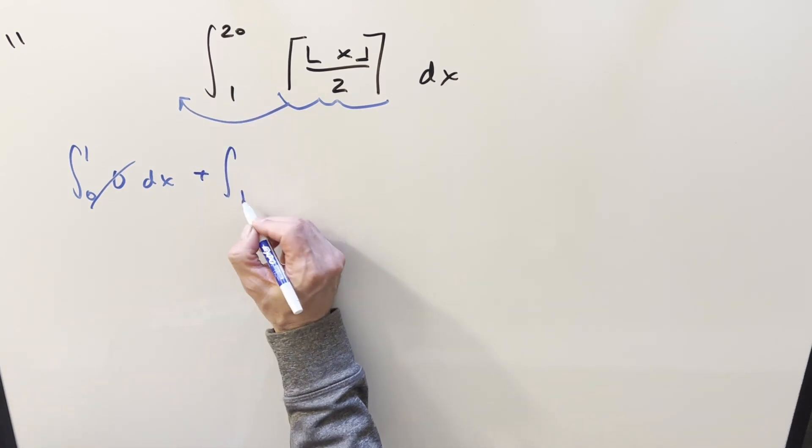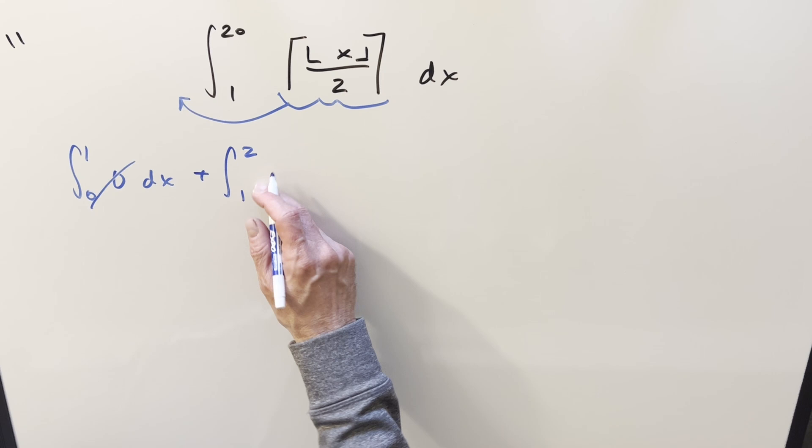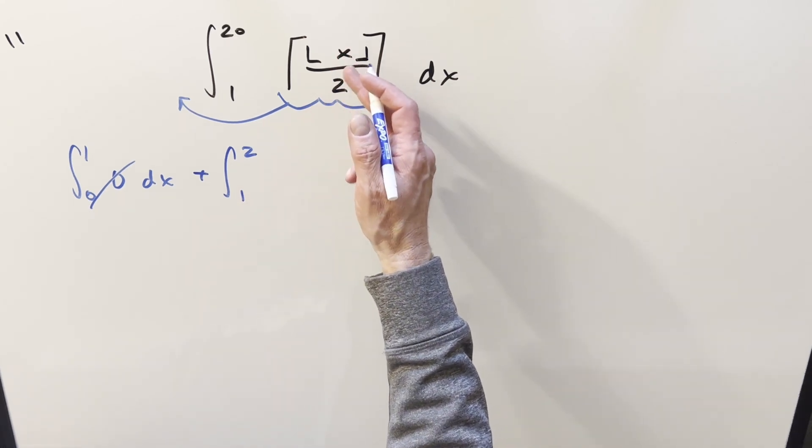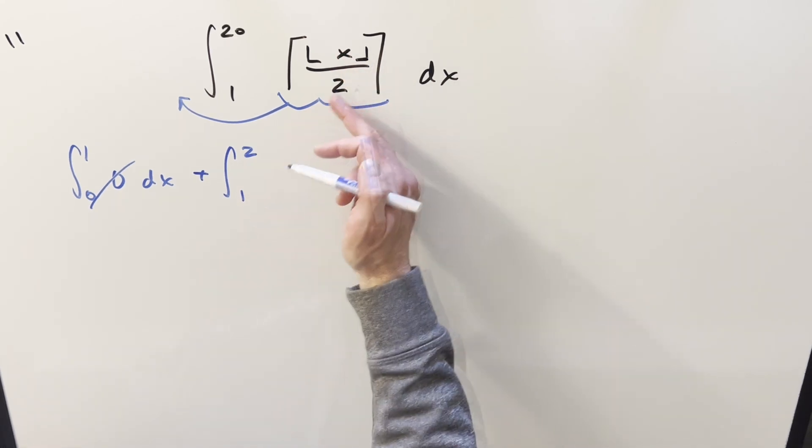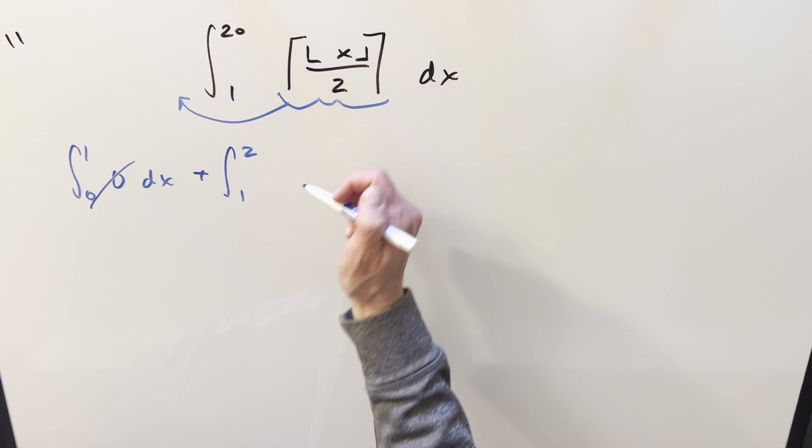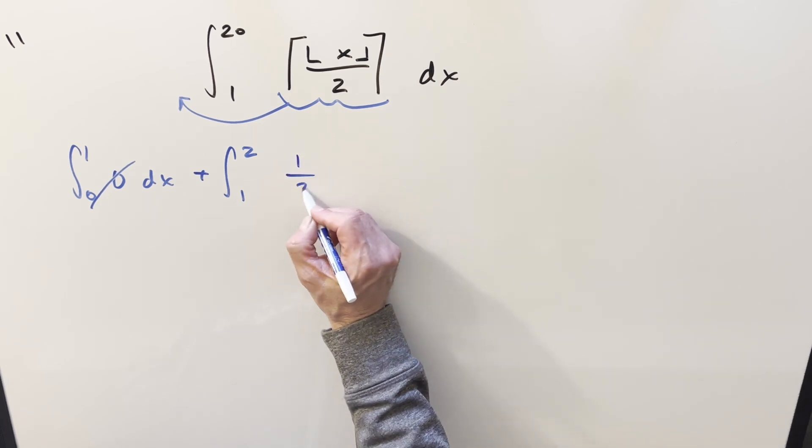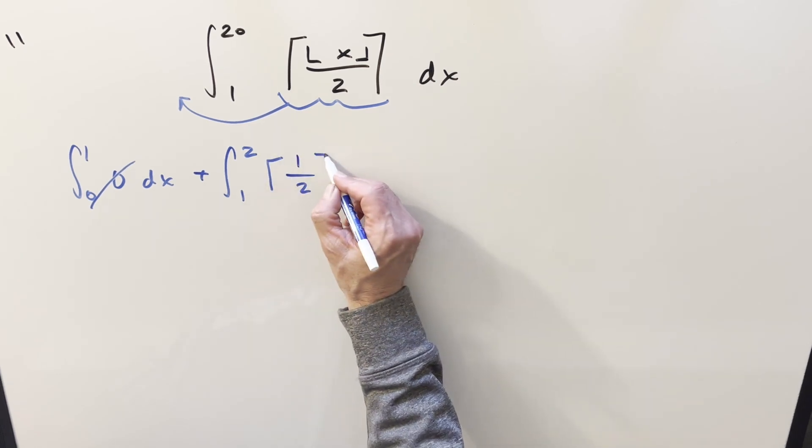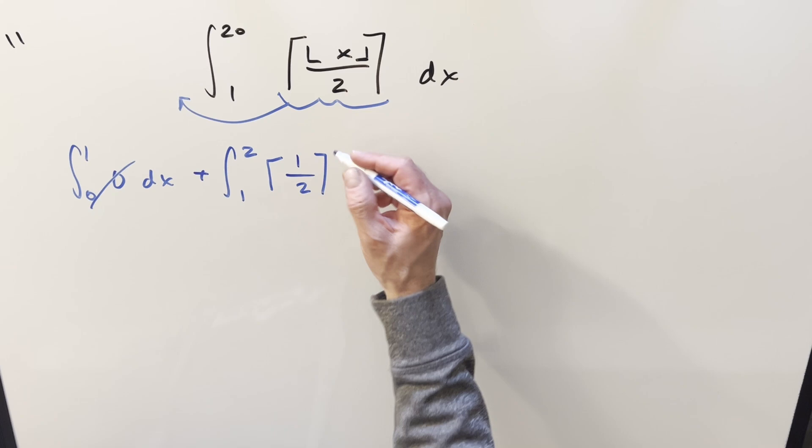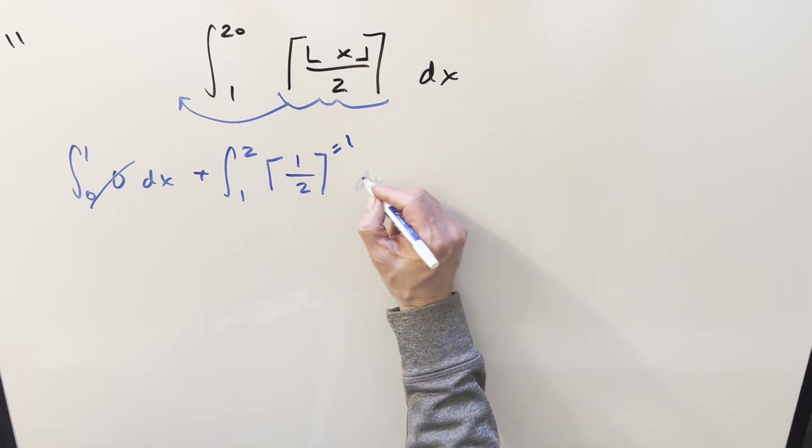Then going on to the next one, we'll look at an integral from 1 to 2. The x values between 1 and 2, floor rounds us down to 1. So we end up with 1 half inside the ceiling function. I'm going to just leave it like this for now. But what's going to happen is 1 half gets rounded up to 1. So this value is just going to be a 1 here.